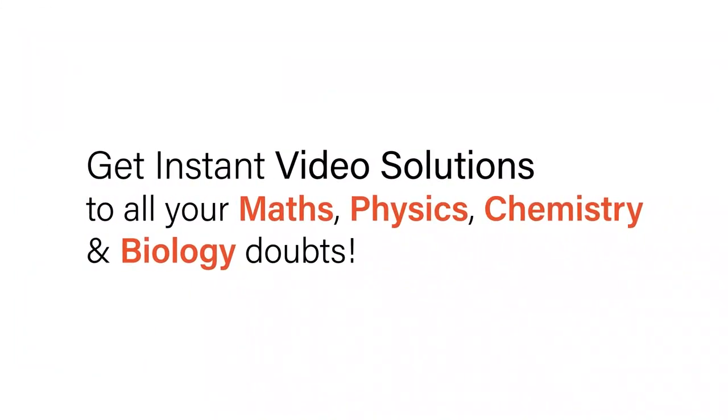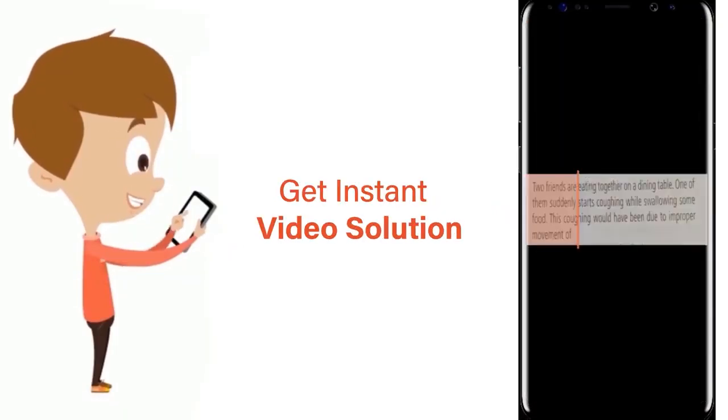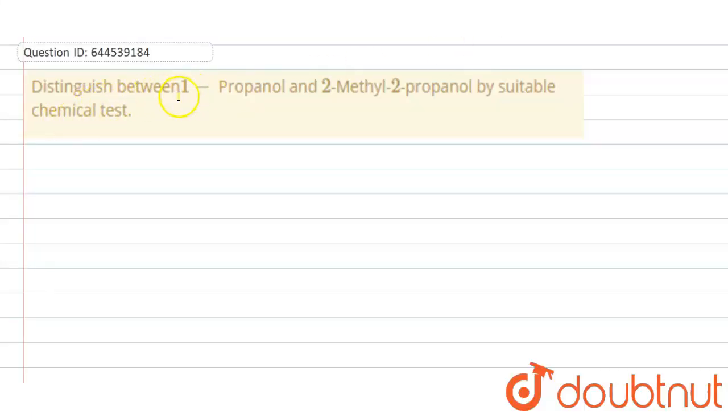With Doubtnet, get instant video solutions to all your maths, physics, chemistry and biology doubts. Just click the image of the question, crop the question, and get instant video solution. Download Doubtnet app today. Our question is: distinguish between 1-propanol and 2-methyl-2-propanol by suitable chemical test.